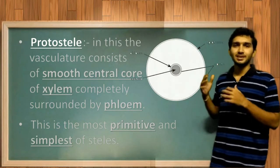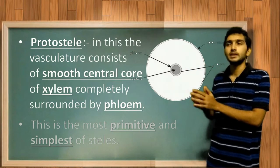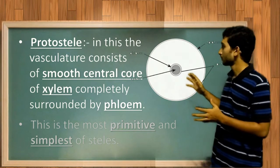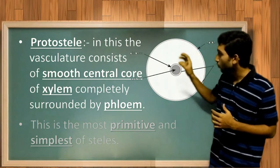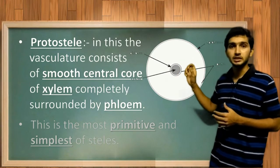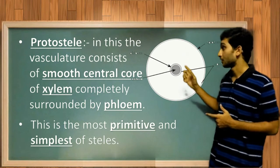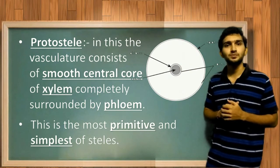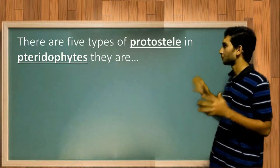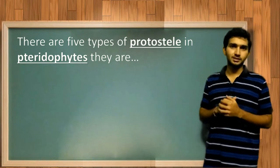Protostele is one in which the central vasculature — a solid central vascular cylinder — is surrounded by a uniform layer of phloem. The protostele has a central solid core of xylem surrounded by a uniform layer of phloem. This is the most primitive and simplest type of stele. There are five different kinds of protostele in pteridophytes.